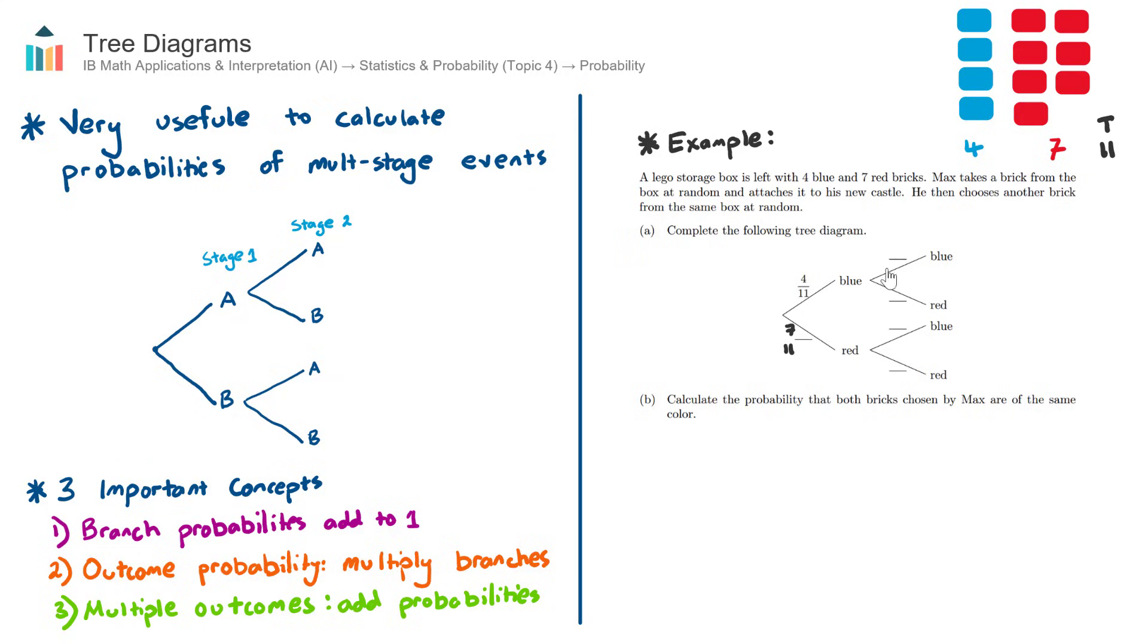That's the first stage completed. Let's now finish the second stage. Important concept here: you need to think when looking at the second and third stages, is this a question of with replacement or without replacement? Max takes a brick from the box and attaches it to his new castle. Once he has taken that first selection, stage one, the number of bricks left in the box is no longer 11. We actually only have 10 bricks left. This is an example of without replacement.